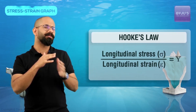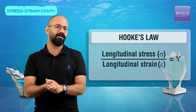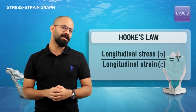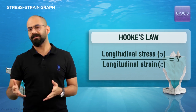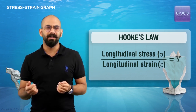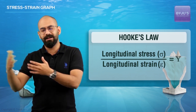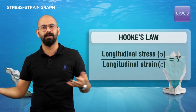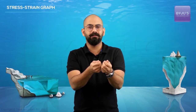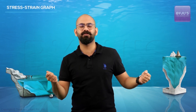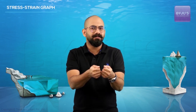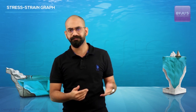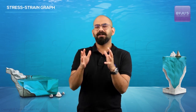Hooke's law is valid only up to a certain limit and only for small stresses. But how do we find that, and more importantly, what happens beyond that point if I increase the stress beyond that? We also know that at some point, if I increase the stress too much, a body will break. We have seen stuff breaking, so how does all this happen? To analyze this, let's do a simple exercise.